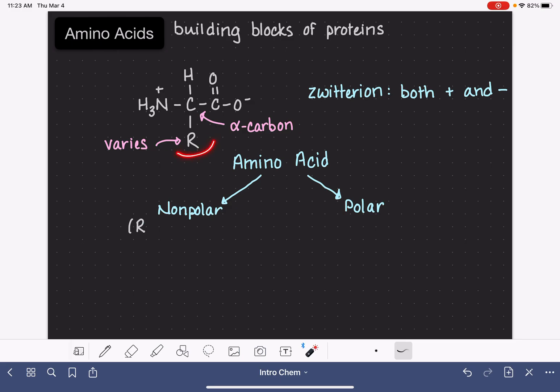the R on the amino acid could be hydrogen, or it could be a larger group that contains only carbons and hydrogen atoms. So we refer to that as a hydrocarbon.